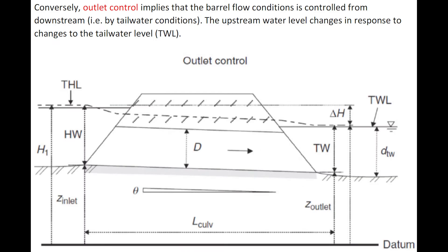Outlet control implies that the barrel flow conditions are controlled by the tailwater condition. The upstream water level will change in response to any change of the tailwater level.